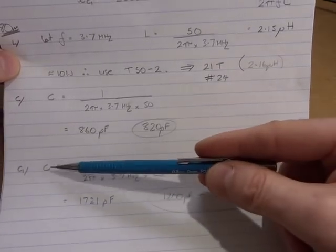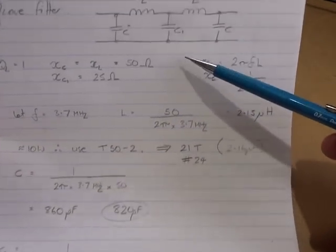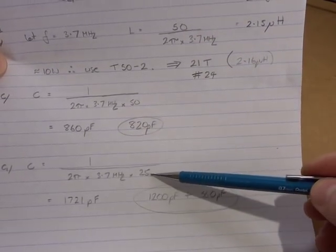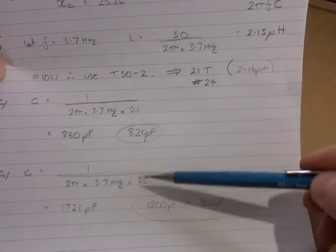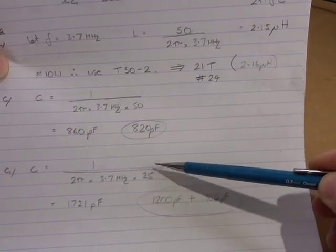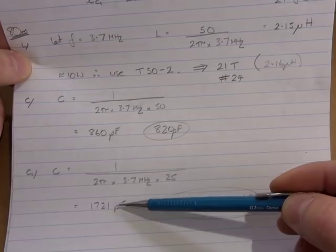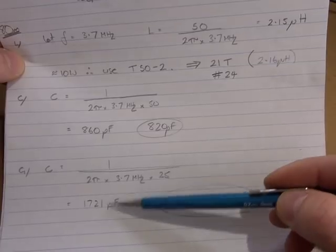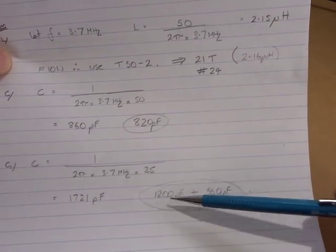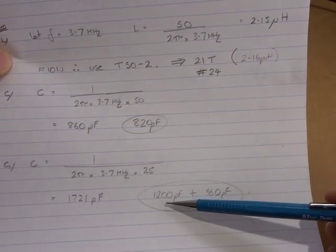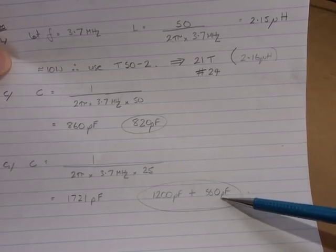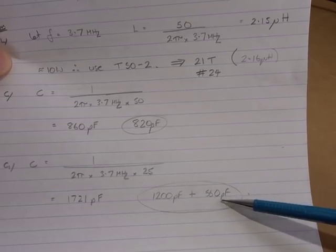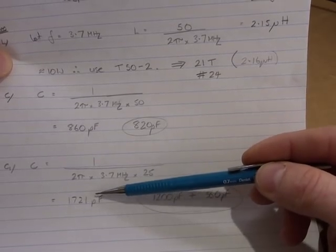Now C1, that's that center capacitor up here in our filter. Again, the only difference there is we'll do exactly the same solving, but we're only looking now for 25 ohms, and it'll come out at 1721 picofarads, which is an unusual value. Well, it's suffice to say we'll make it up close enough as a 1200 picofarad capacitor in parallel with a 560, which would be 1760 picofarads, which is reasonably close to 1721.